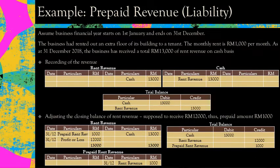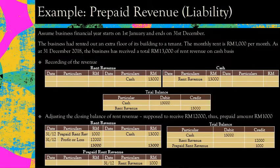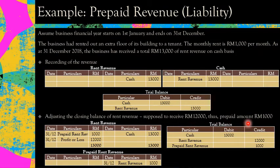The next item is prepaid revenue. The business rented out an extra floor to a tenant, but this time the business received RM13,000 of revenue on cash basis — more than the RM12,000 it should have received. So it becomes a liability. You record debit cash, credit revenue RM13,000. Then adjust: the prepaid amount is RM1,000, which is a liability, so credit rent revenue and debit prepaid rent revenue RM1,000. The balance sent to profit or loss is RM12,000.